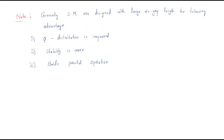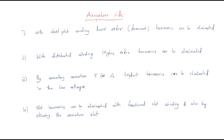Note: generally synchronous machines are designed with a large air gap length for the following advantages. First, flux distribution is improved. Second, stability is more — the machine becomes more stable. Third, stable parallel operation can be performed.